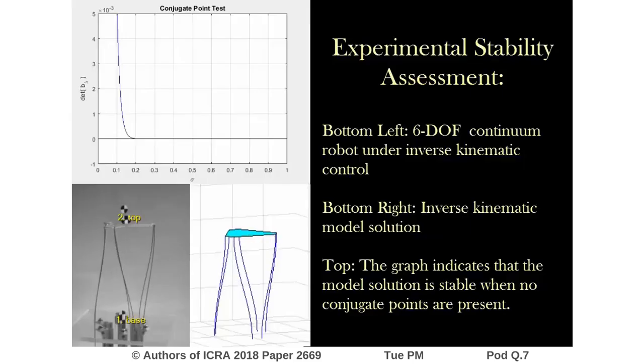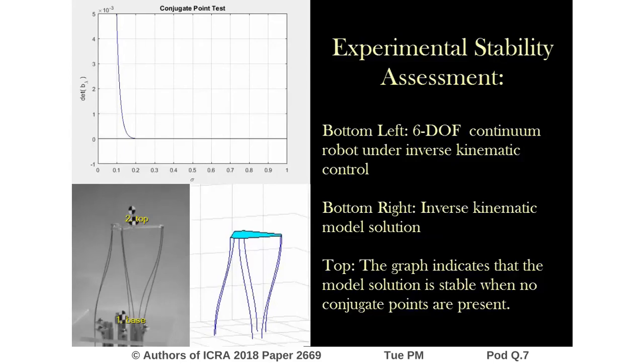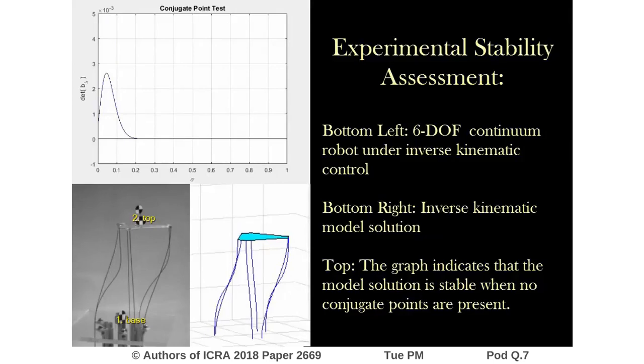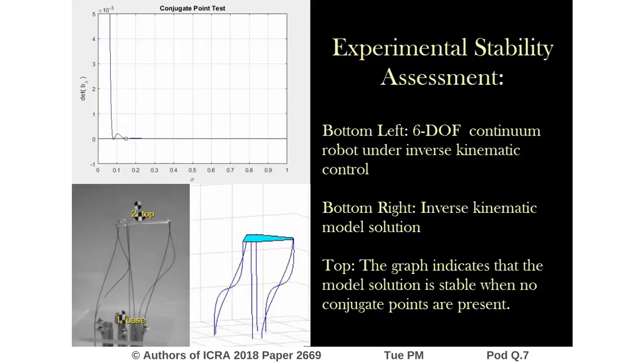In this video, the robot starts from a centered configuration and translates until it becomes unstable. At the moment of instability, the numerical solution no longer describes the physical reality of the robot. The conjugate point test indicates that instability is occurring, so we are able to mathematically verify which robot configurations are stable.